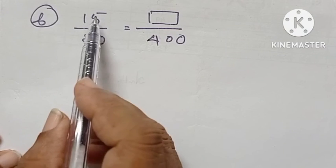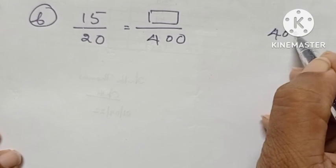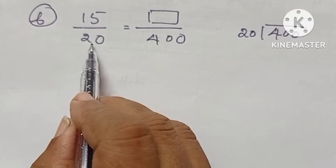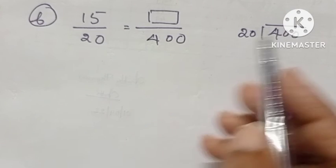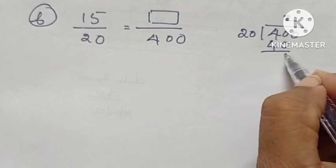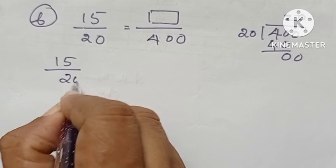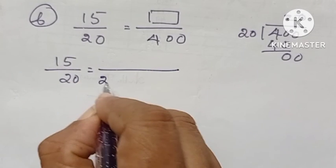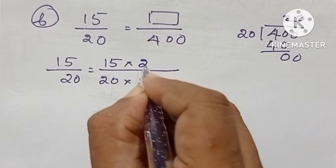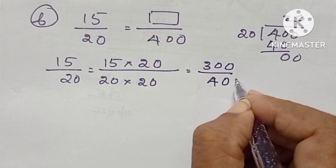Another question: 15 divided by 20 equals dash divided by 400. First, divide 400 by 20 — 400 is the new denominator and 20 is the original denominator. Therefore, 400 divided by 20 equals 20. Since we multiply the denominator by 20, we multiply the numerator also by the same number: 15 into 20 equals 300. The answer is 300 divided by 400.